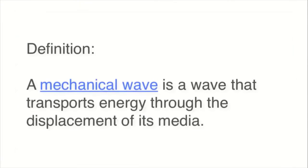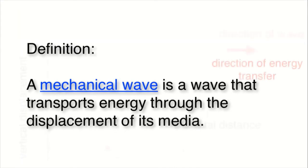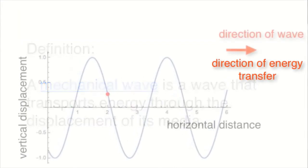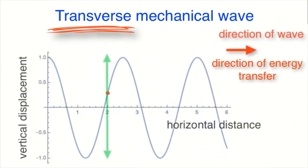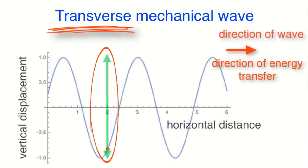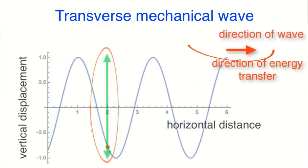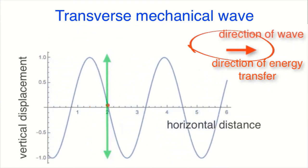A wave that transfers energy through the displacement of the medium that it passes through is called a mechanical wave. The idealized waves that we've explored are transverse mechanical waves. Transverse because the medium is displaced perpendicular or transverse to the direction of the wave. And mechanical because the wave is a mechanical disturbance of the medium.